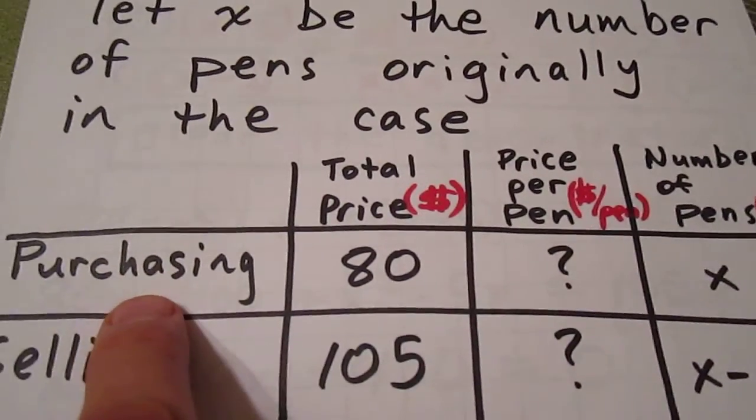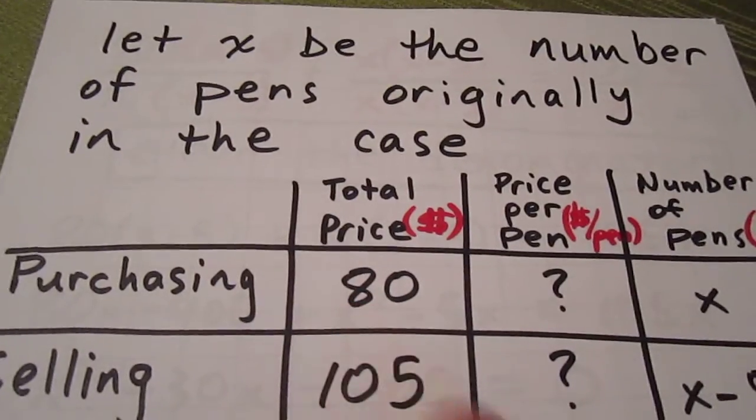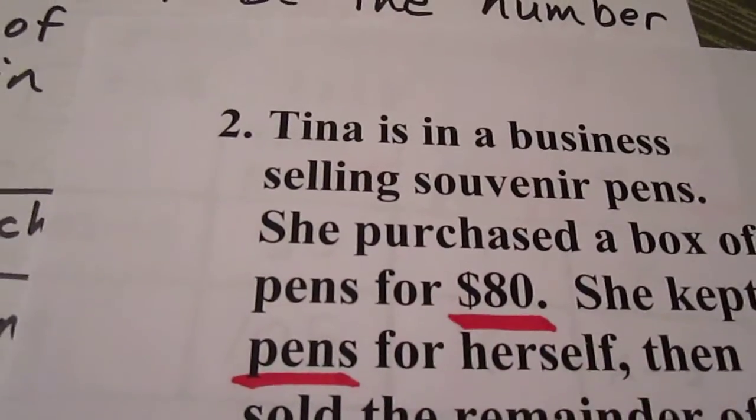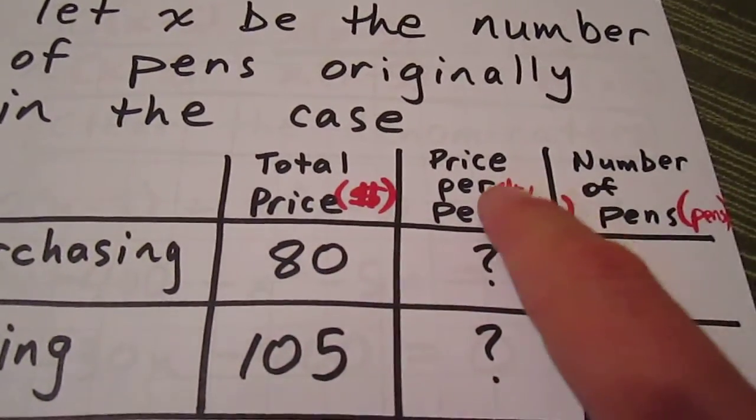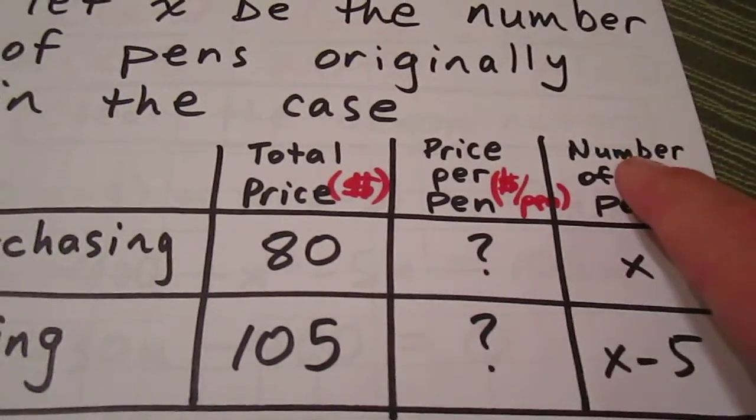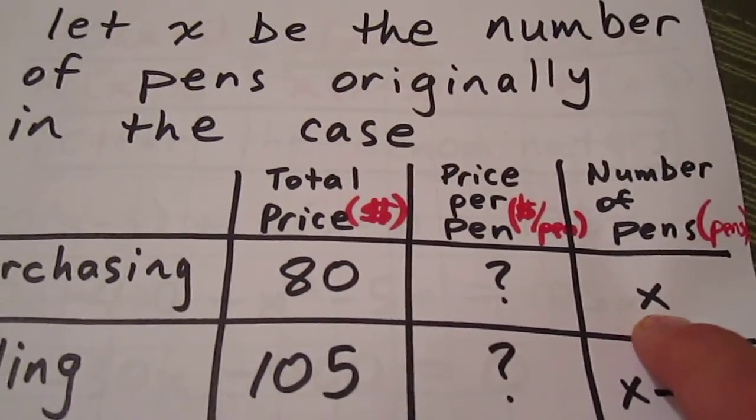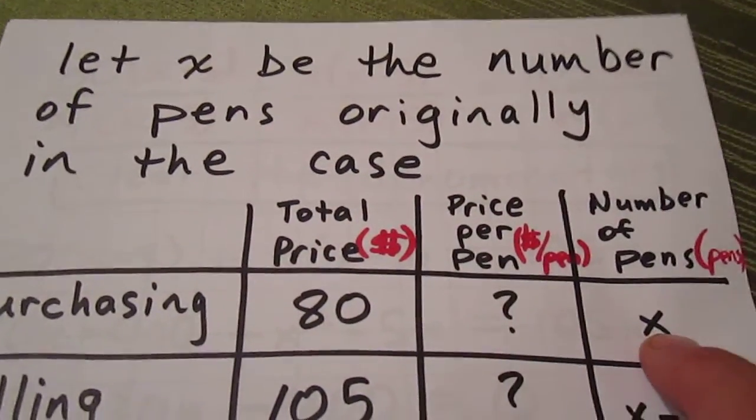In the scenario where Tina is purchasing the pens, we see that she purchased them for a total of 80 dollars. So in the purchase scenario, the total price is 80. We don't know what price she spent per pen, but we do know that we set the number of pens equal to X at the beginning.